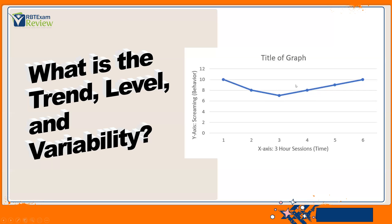How's our variability? Okay, our lowest data point is what? Seven, highest is ten. Not much variability. Pretty consistent, pretty stable. So, I would consider this graph, no trend, high level, no variability.